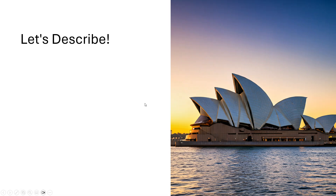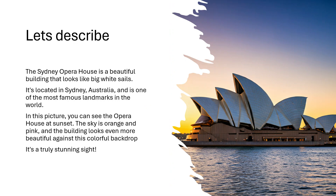Have a go — stop the film. Here's a famous building in Australia — the Sydney Opera House. Try to describe what it looks like. How big is it? What is it next to? Here's an example: The Sydney Opera House is a beautiful building that looks like big white sails. It's located in Sydney, Australia, and is one of the most famous landmarks in the world. In this picture, you can see the Opera House at sunset — the sky is orange and pink, and the building looks even more beautiful against this colourful backdrop. It's a truly stunning sight.